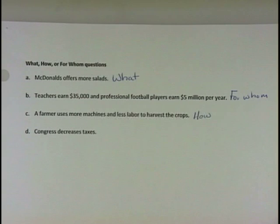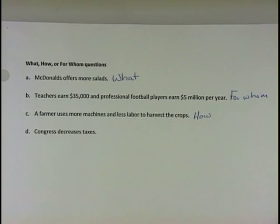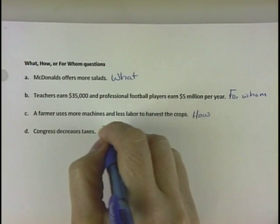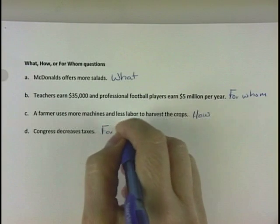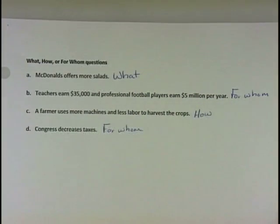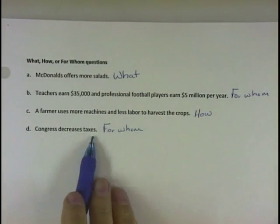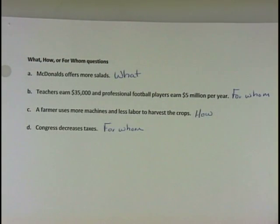The last one's a little more tricky — it says Congress decreases taxes. Decreasing taxes means I'm going to have more money left over after I pay my taxes, so I should be able to buy more stuff. This one's going to be a 'for whom' question, because the more money I have left over, the more things I could buy — that's telling us who's going to get the stuff that is produced.